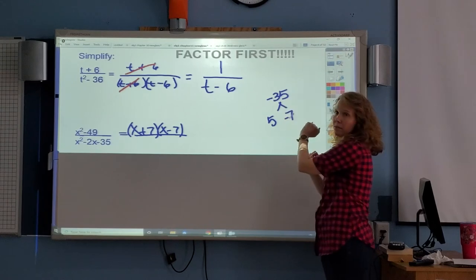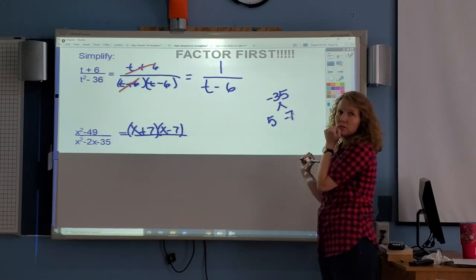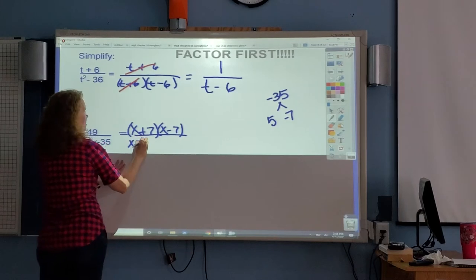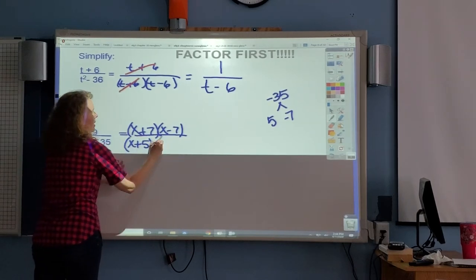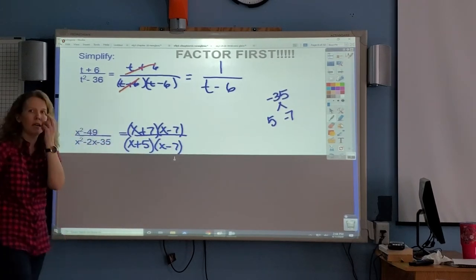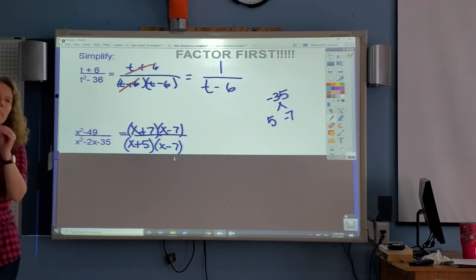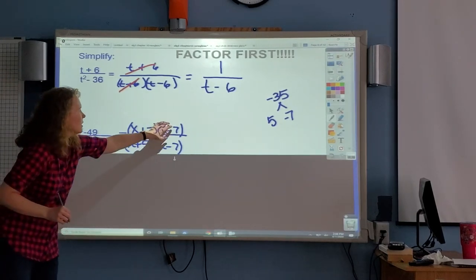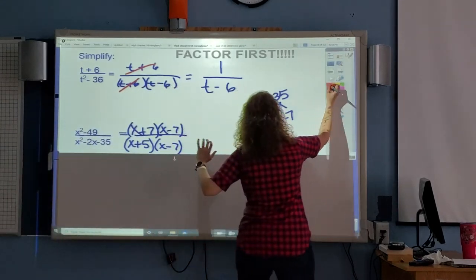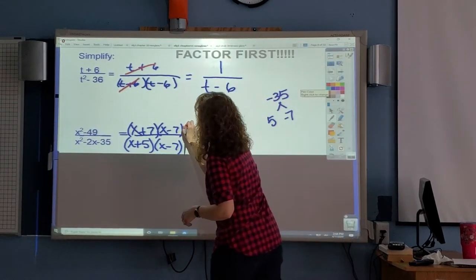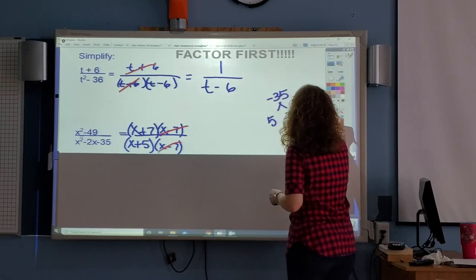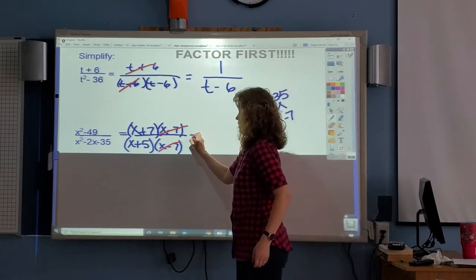So check it. Multiply, do you get negative 35? When you add, do you get negative 2? Sure enough. So x plus 5 goes here, x minus 7 goes here. Now use your eyes. Do you see a binomial exactly the same on the top and the bottom? It's these two. I like to take my red pen and mark them off because I'm canceling them out. So we're going to go back and write down what's left over. So x plus 7 all over x plus 5.